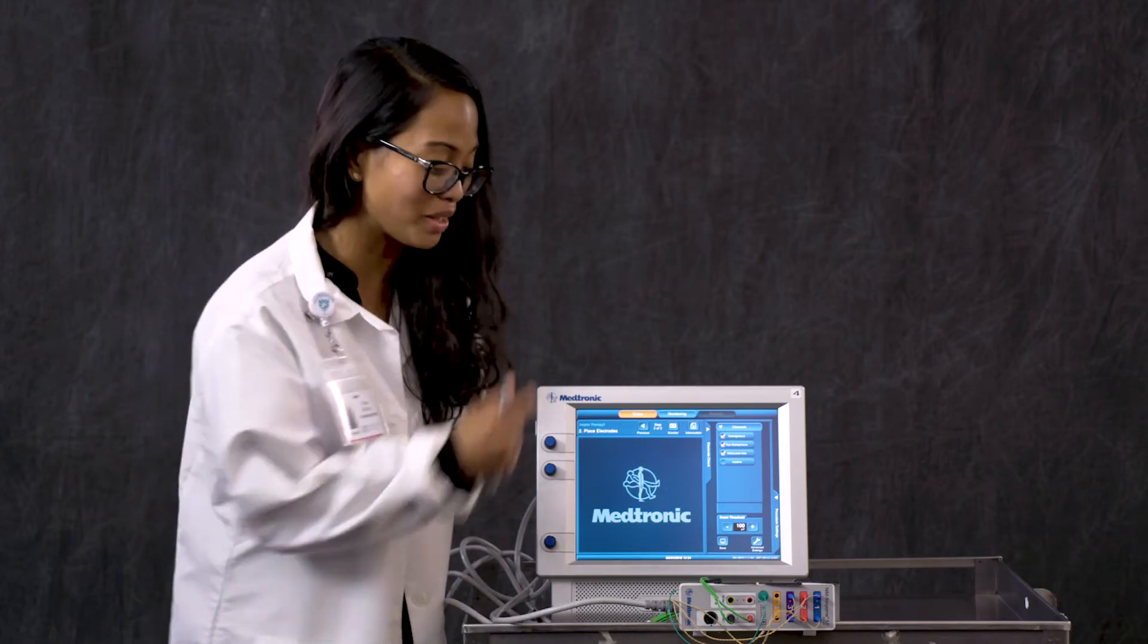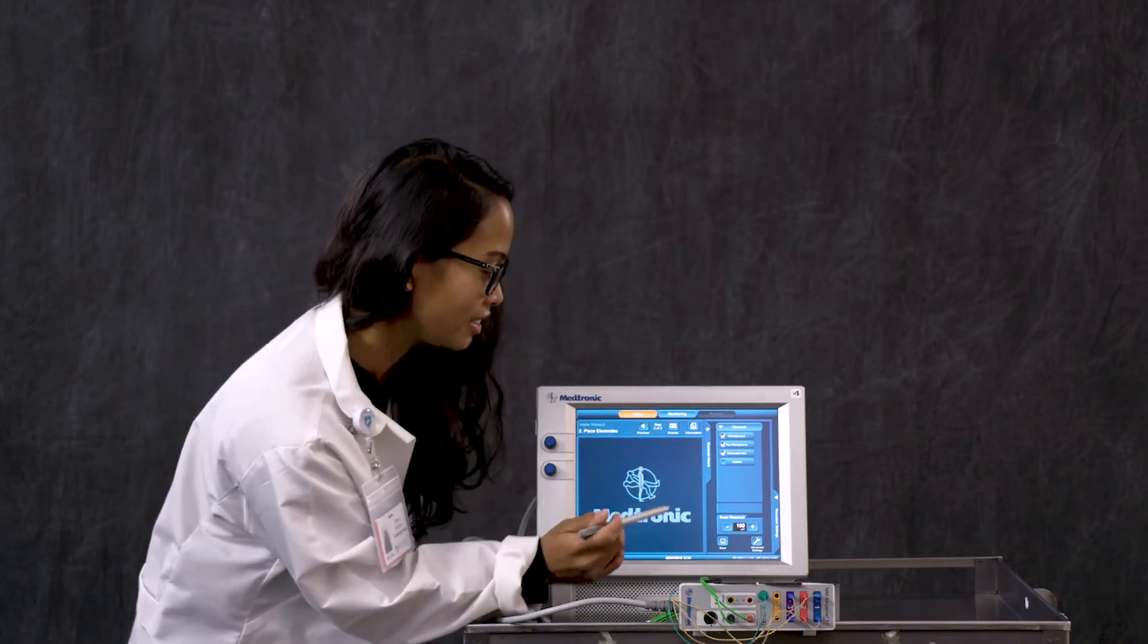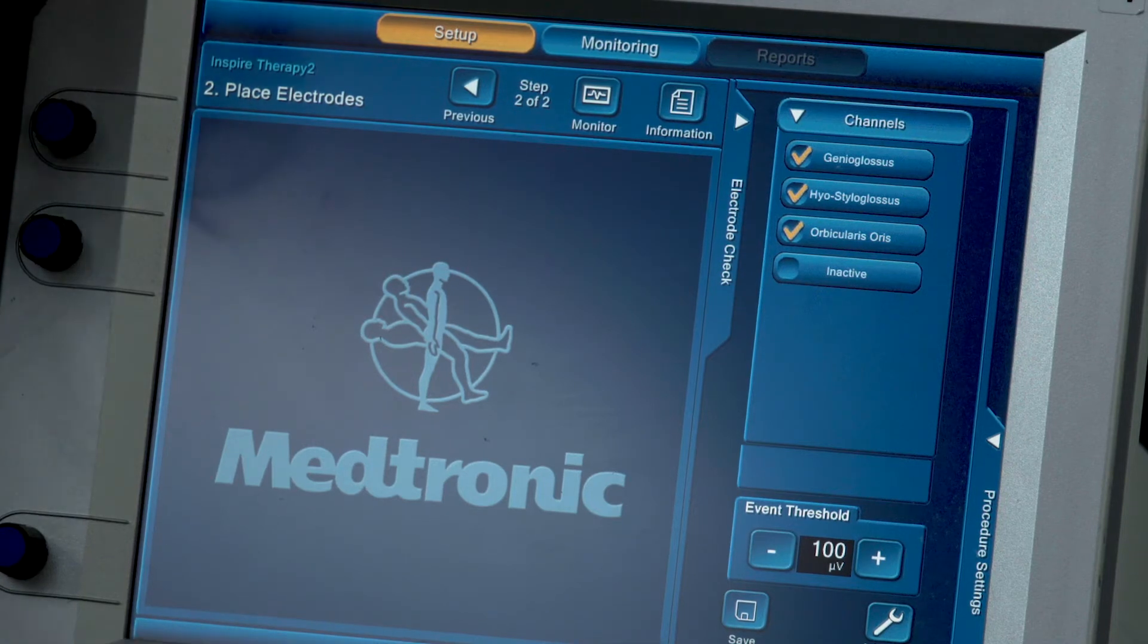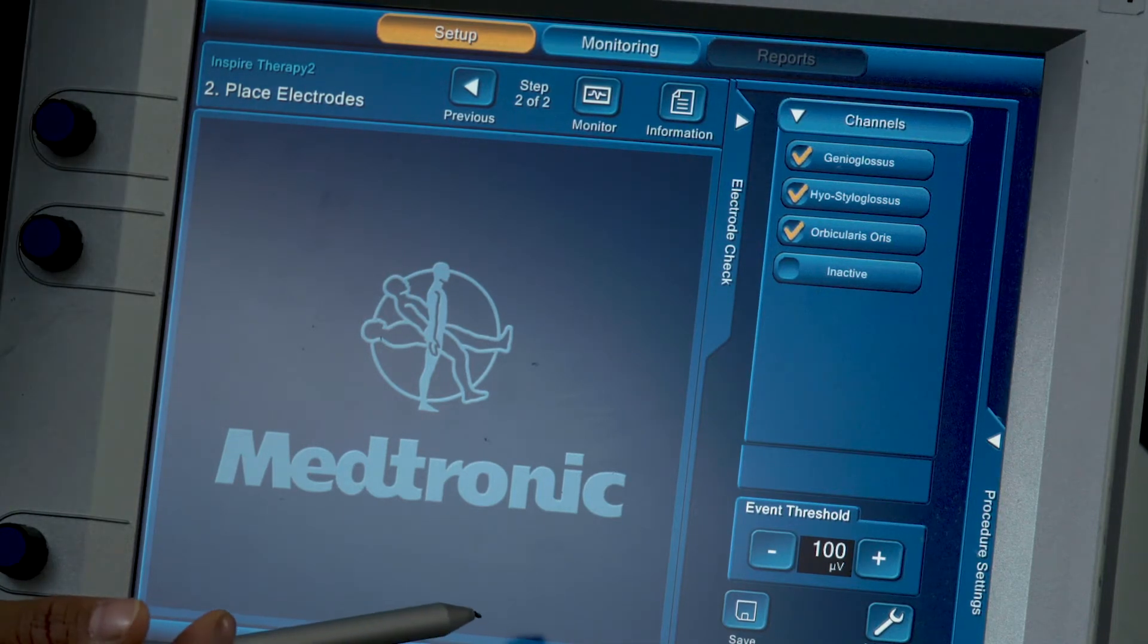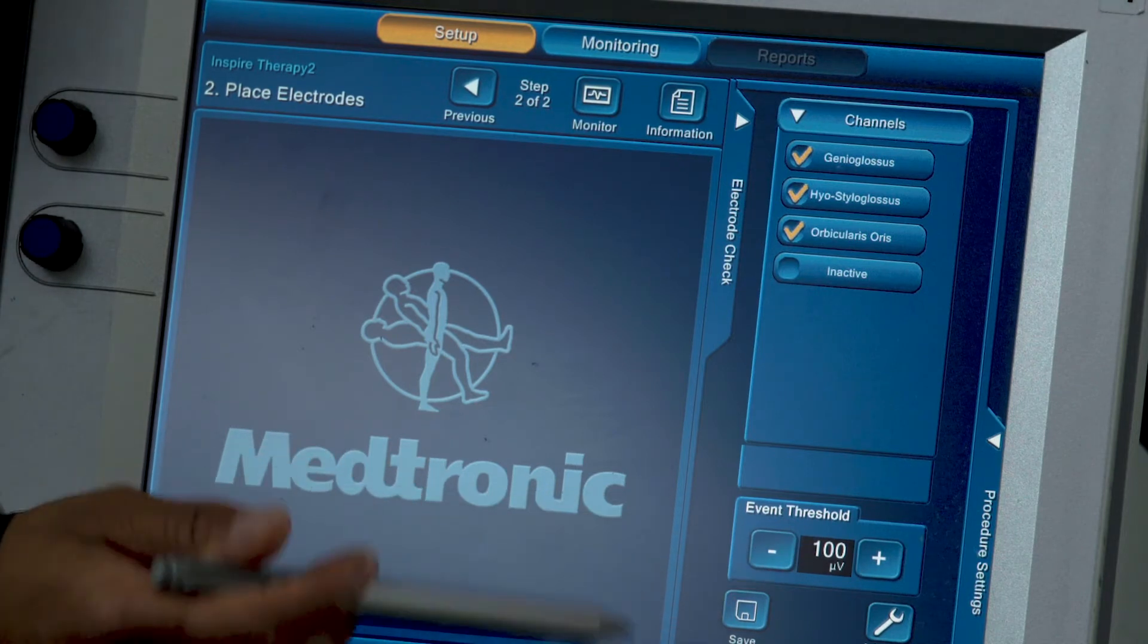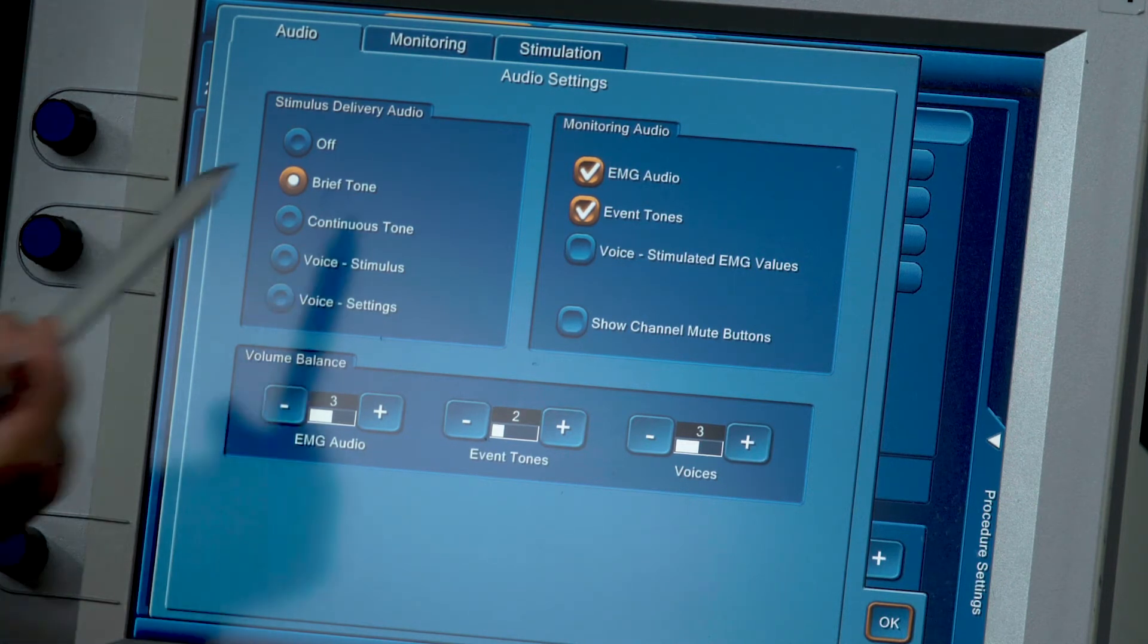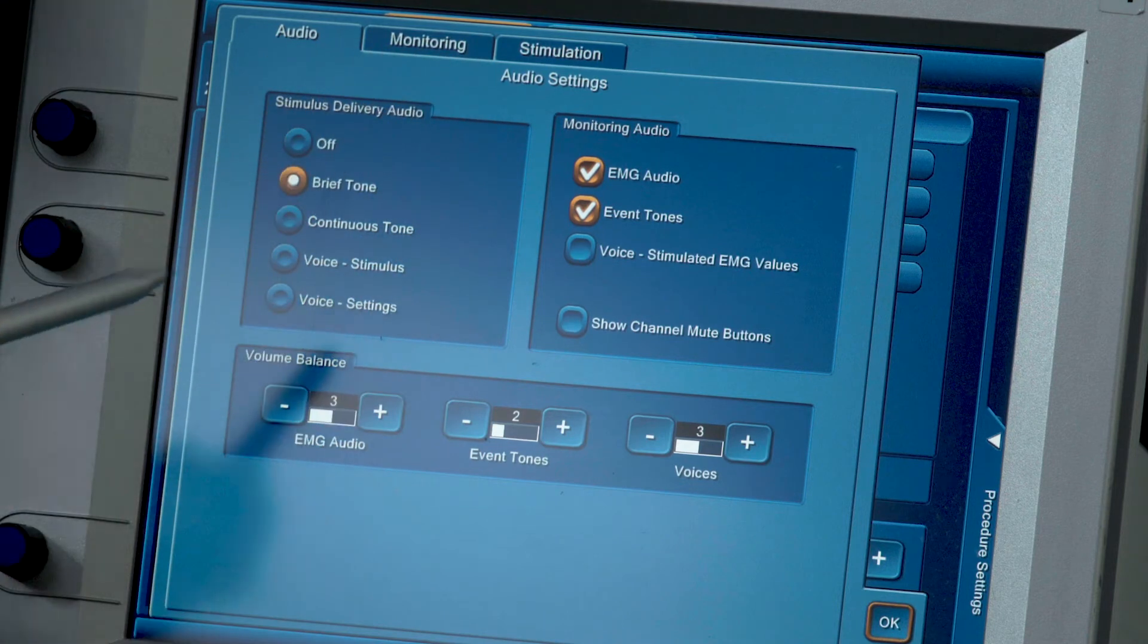So now we are going to move on. We've made our three channels, we've looked at our event threshold which is at 100 microvolts, and we saved it. We are going to our advanced settings. This portion is very important when creating the template. You've got three tabs: audio tab, monitoring tab, and stimulation tab.